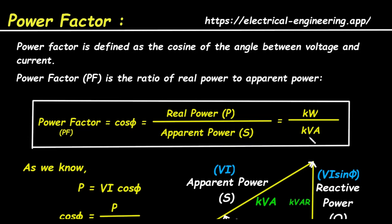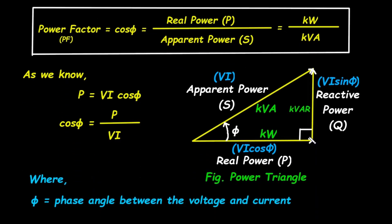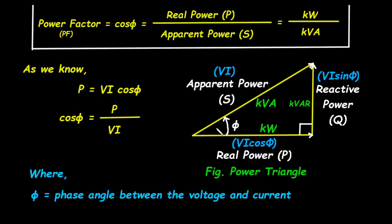To understand this relationship better, we can use a concept called the power triangle. Imagine a right angle triangle. The horizontal base of this triangle represents the real power, P. The vertical side represents the reactive power, Q, which is measured in kilovolt ampere reactive, or KVAR. The hypotenuse, which is the longest side of the triangle, represents the apparent power, S.